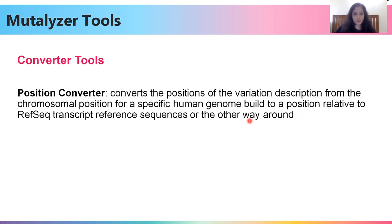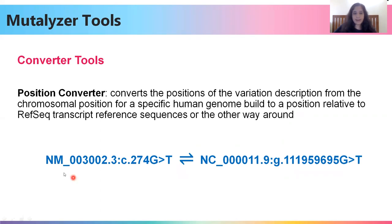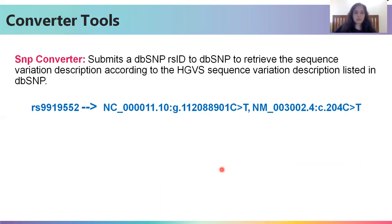The first converter tool is the position converter tool, which converts an NM ID into an NC ID and vice versa. The second is the SNP converter. The dbSNP database, which is part of the NCBI, attaches unique RS IDs to each variant it includes. Sometimes a paper describes a variant only by its RS ID throughout. In that case, you can copy the RS ID into the SNP converter tool and it will give you all the relevant HGVS IDs — the NC, NM, NP IDs and so forth — associated with your RS ID.